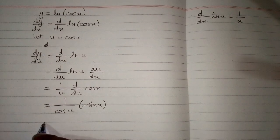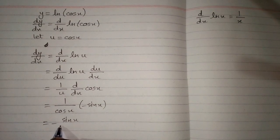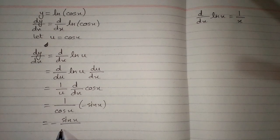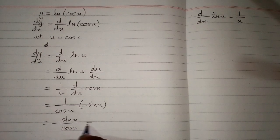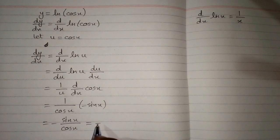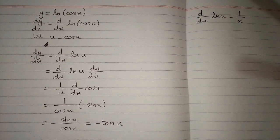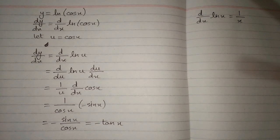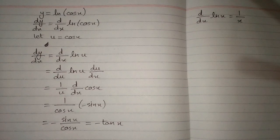And this can be written as minus sine x upon cosine x. And minus sine x upon cosine x is minus tangent of x. So the derivative of ln of cosine of x is equal to minus tangent of x.